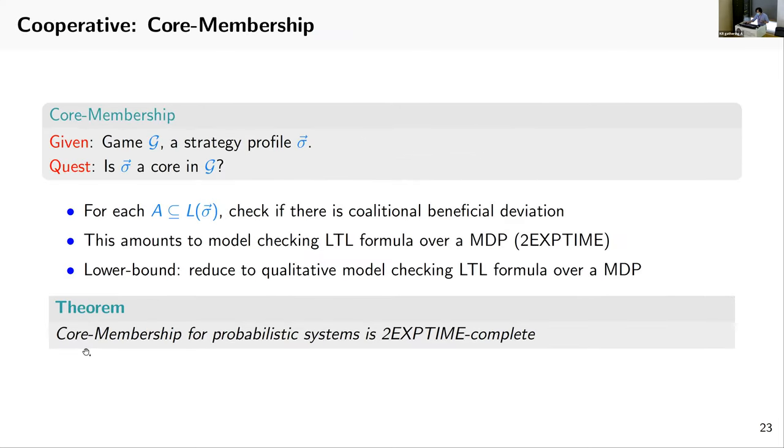For membership, we ask that for each coalition A, a subset of the losers under σ, we check if there is any coalition beneficial deviation. If not, then we know that σ is a core. This amounts to model checking LTL formulae over Markov decision processes again, and can be done by a double exponential time procedure. For the lower bound, again we reduce to LTL model checking of MDPs. So we know that core membership is also double exponential time complete.